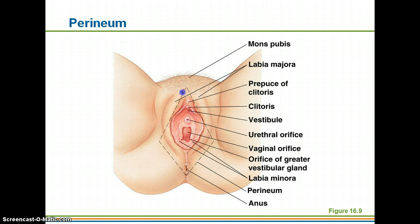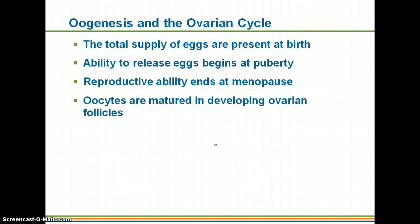The perineum is this area surrounded by the dashed lines — this whole entire area will be the perineum. It includes the external genitalia right here, and then comes back to include the anus as well. Now we're going to look at the formation of the eggs and the ovarian cycle.